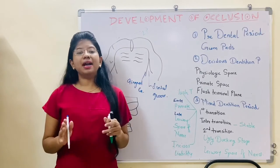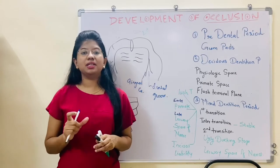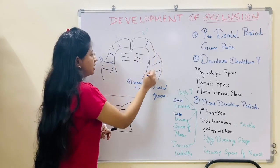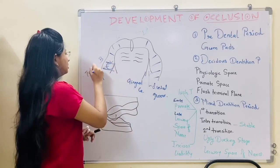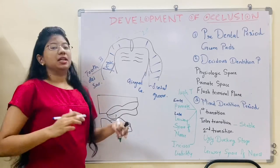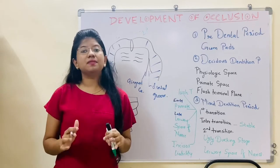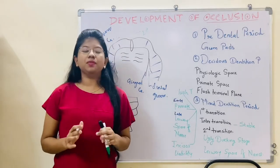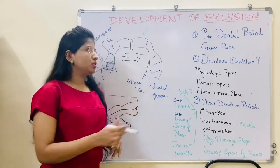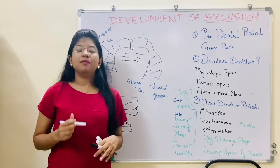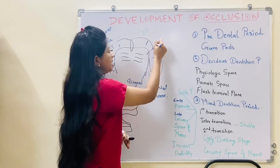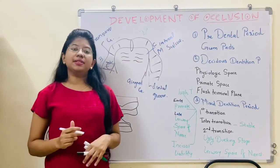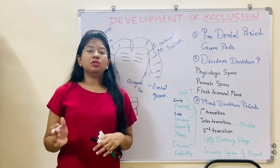The gum pad is divided into 10 segments. In each segment there is a tooth sack from which the deciduous tooth develops — 5 on each side, 10 in total. The segments are divided by grooves called transverse grooves. Remember all the grooves: dental groove, gingival groove, and transverse groove, as many MCQs are asked on them. One more important point is the lateral sulcus, present at the region of the canine and molar, which helps in judgment of inter-arch relation.